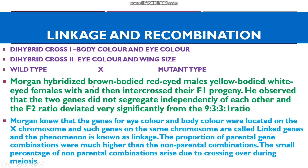Morgan hybridized brown-bodied, red-eyed males (the dominant characters) with yellow-bodied, white-eyed females (the mutant forms) to raise the F1 generation. He then intercrossed the F1 progeny. It was surprising that the F2 generation deviated from the expected 9:3:3:1 ratio — the two genes did not segregate independently as Mendel stated. This is because the genes for eye color and body color were located on the X chromosome, and since the two genes are on the same chromosome, they are called linked genes, and the phenomenon is known as linkage.